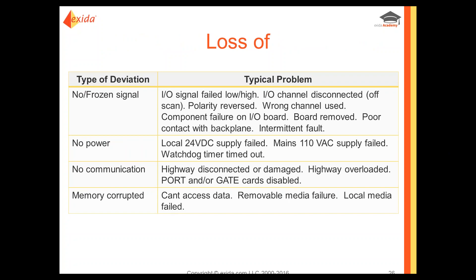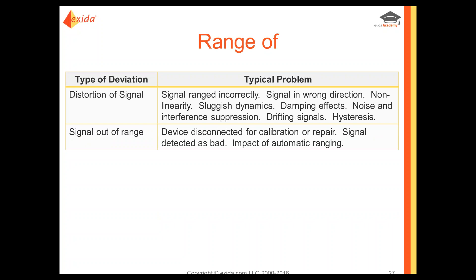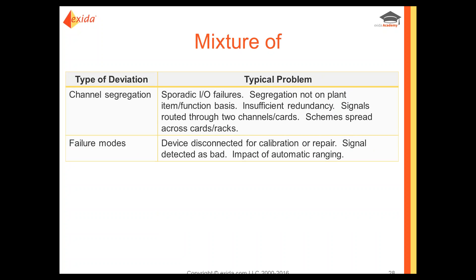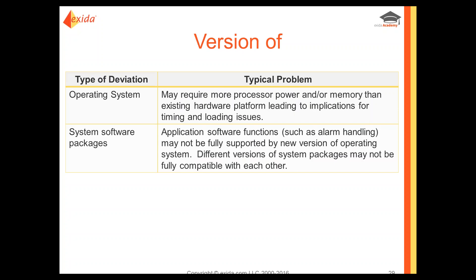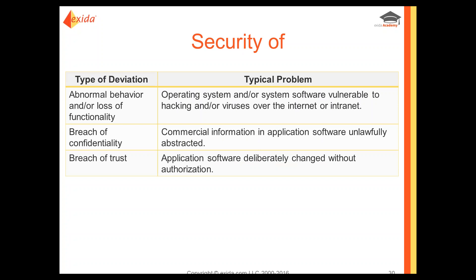Examples of loss-of deviations could include no or frozen signal, no power, no communication, memory corrupted. Range deviations include distortion of signals and signal out of range. Mixture, version, and security deviations are also covered. This webinar is being recorded and the slides will be made available, so all this information will be accessible.